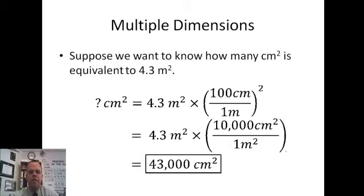So let's say we want to know how many centimeters squared are in 4.3 meters squared. We're starting with and looking for the number of centimeters squared. That's our looking for data. We're given that there are 4.3 meters squared. So we need to get rid of meters and go to centimeters. But we don't know a conversion factor between meters squared and centimeters squared. We do know that for each meter, there's 100 centimeters.